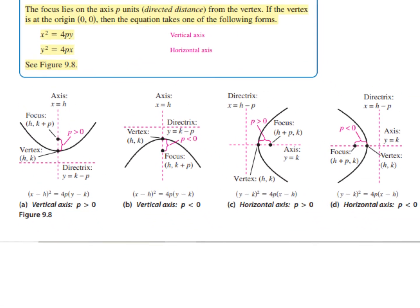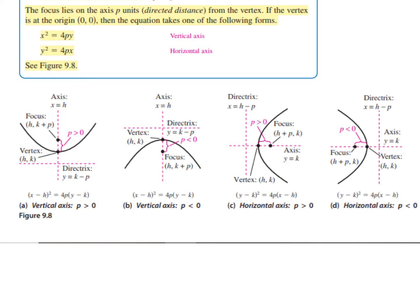We want to focus on these equations. Anytime our parabola opens up and the focus is up here, we use this equation. If it opens down and the focus is down here, we use this equation. If it opens to the right and the focus is over here, we use this equation. And if it opens to the left and the focus is in here, we use this equation. I like to think of it as a bowl — the focus is just inside the bowl, always where it opens up to.